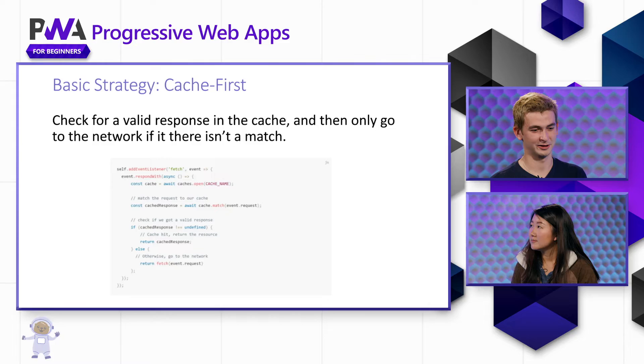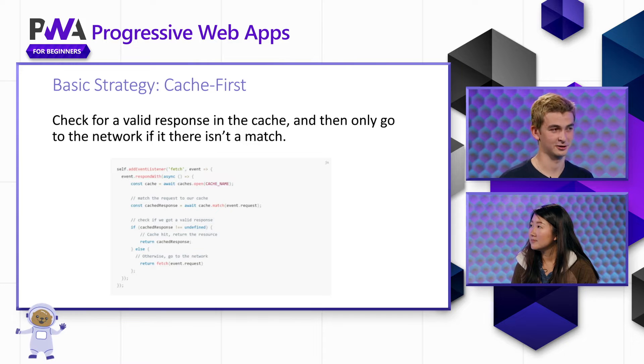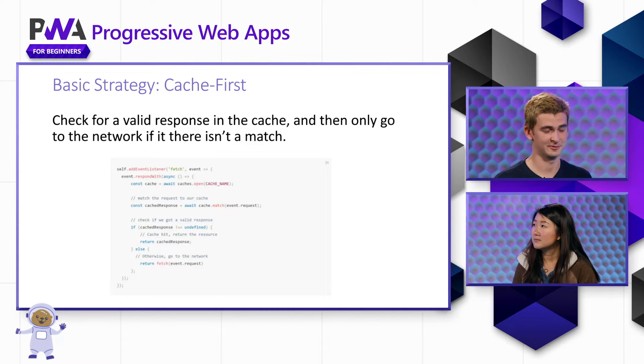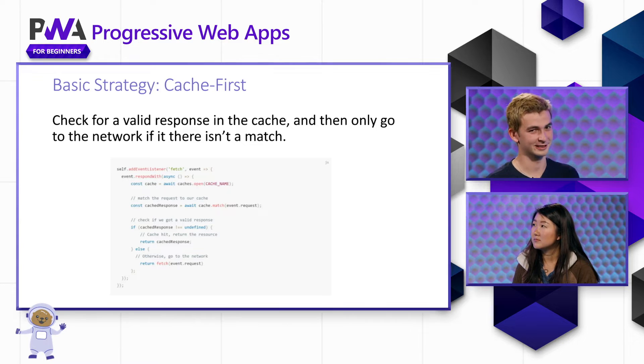Now let's talk about caching strategies. The easiest one to implement is called cache first. Once you have something in your cache, you need a way to fetch it. Cache first is one of the most basic starter strategies — it has a few drawbacks, but it's really easy to get started with.